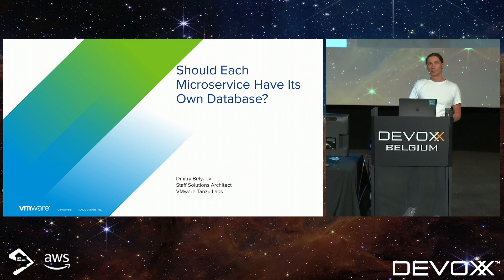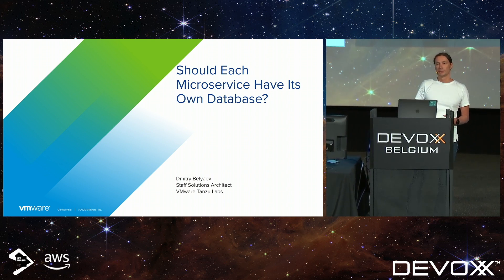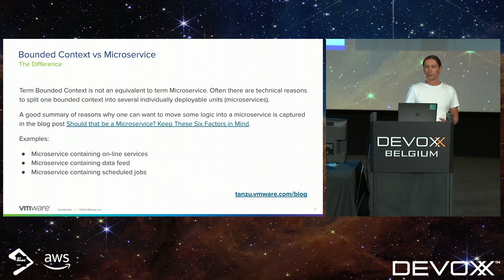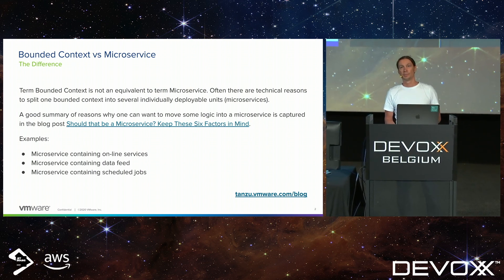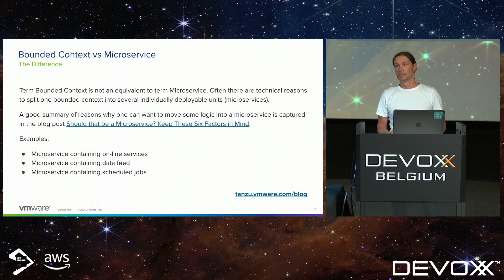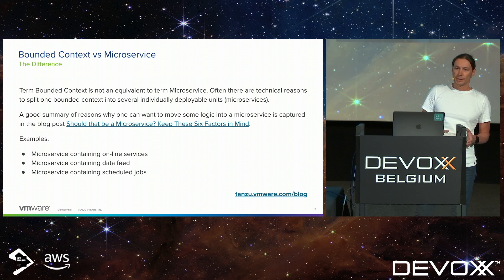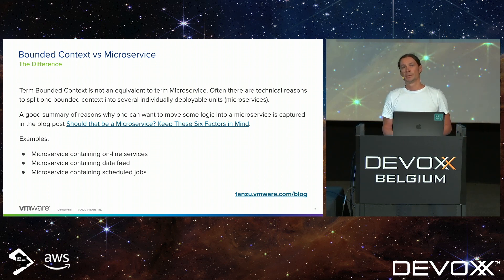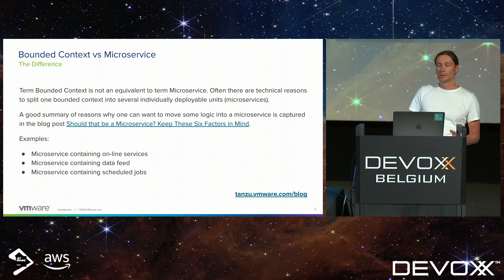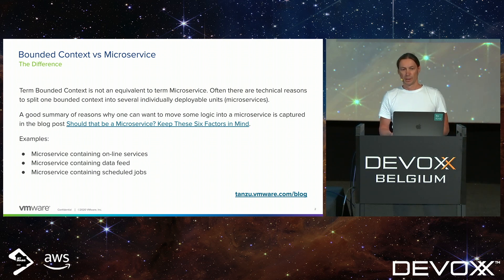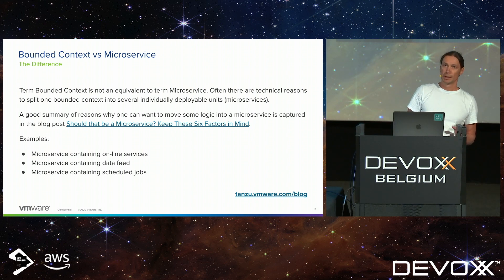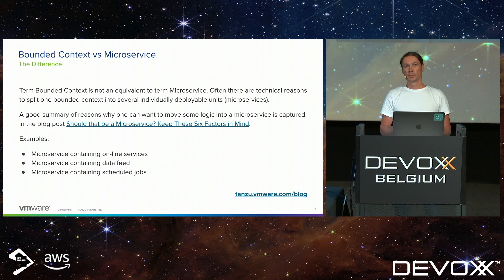But before we start with these examples, we have to clarify some terminology. What is important for today's session is to understand the difference between the term bounded context and the term microservice. A bounded context is a logical construct — a grouping of a cohesive set of functionality covering one business domain. That is actually the reason why the term bounded context is often interchangeable with the term business domain. A microservice, on the other hand, is a physically deployable piece of software. And in many cases, one bounded context is implemented as exactly one microservice.